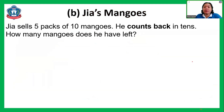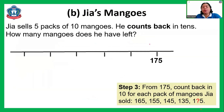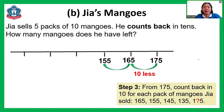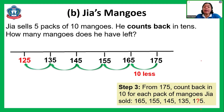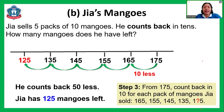Gia has five bags of 10 mangoes, meaning 50 mangoes to give back. He counts back in tens from 175, five times: 165, 155, 145, 135, and 125. He counts back 50, so Gia has 125 mangoes left. This is how to count back in tens.